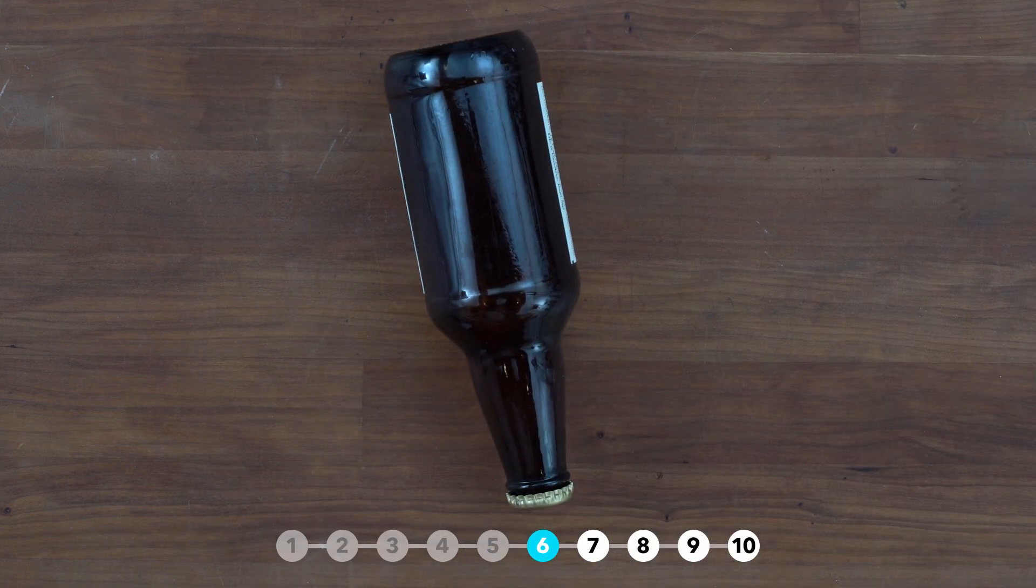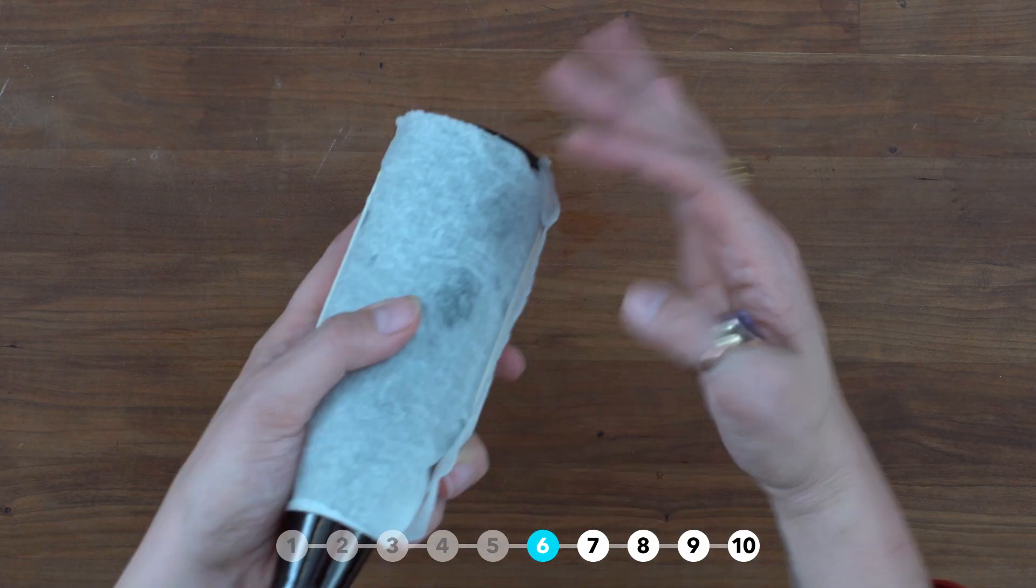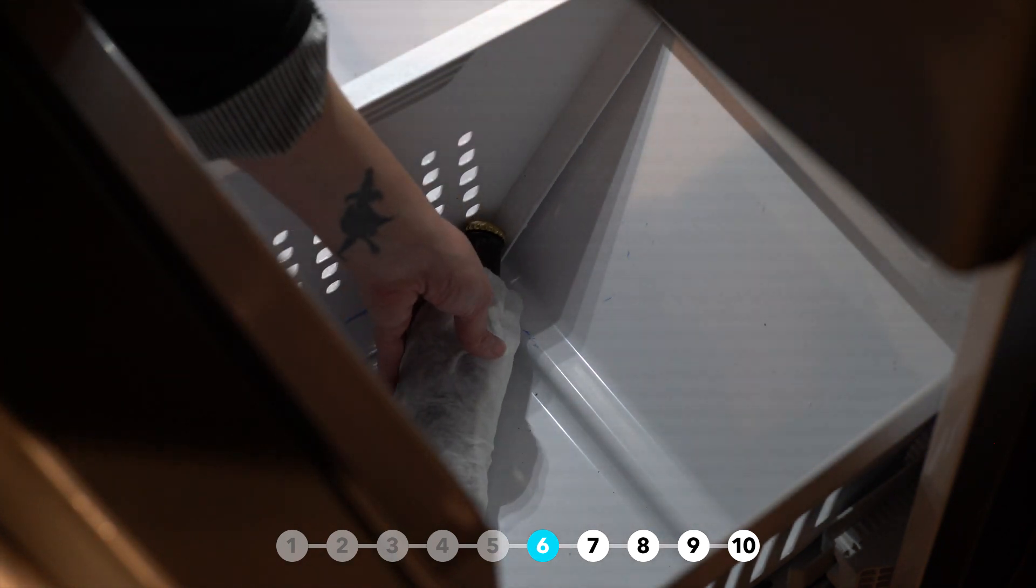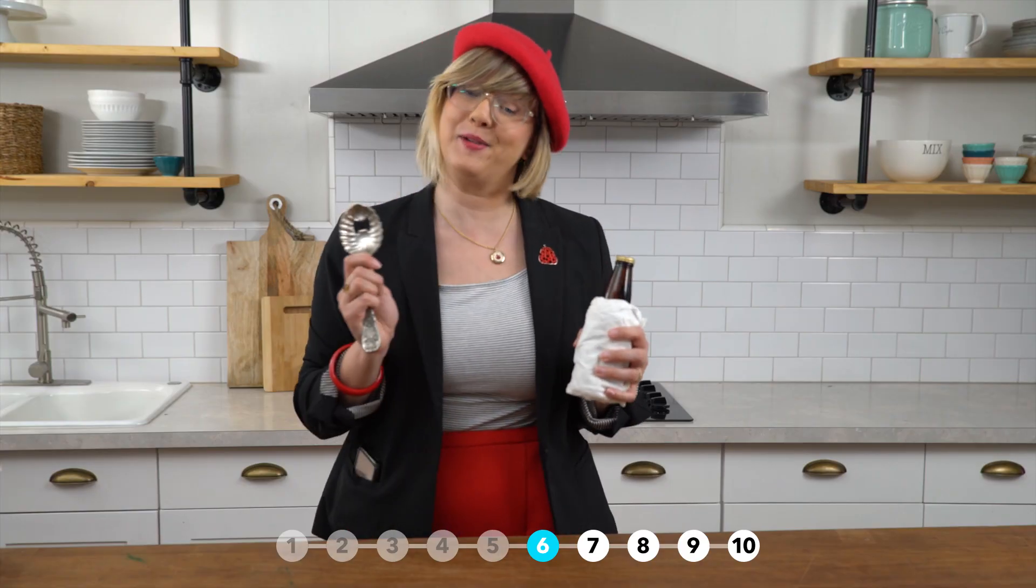Here's a cool trick. Wrap your beer in two damp paper towels, put it in the freezer, and it'll be chilled in under 10 minutes. And now I'm going to open it.